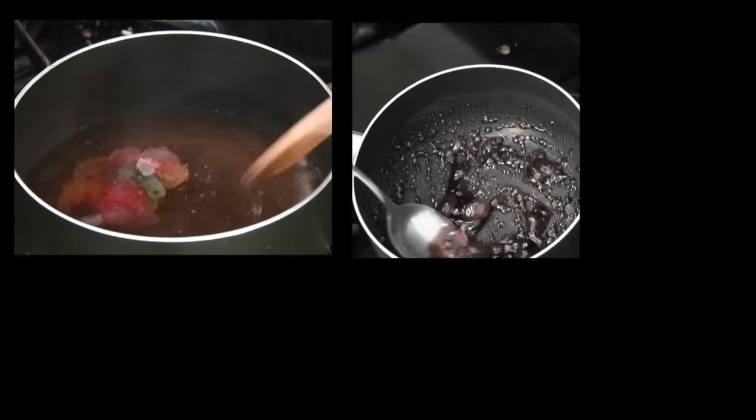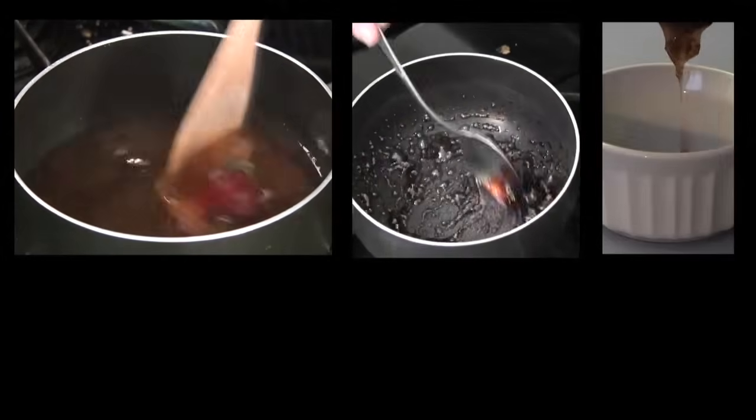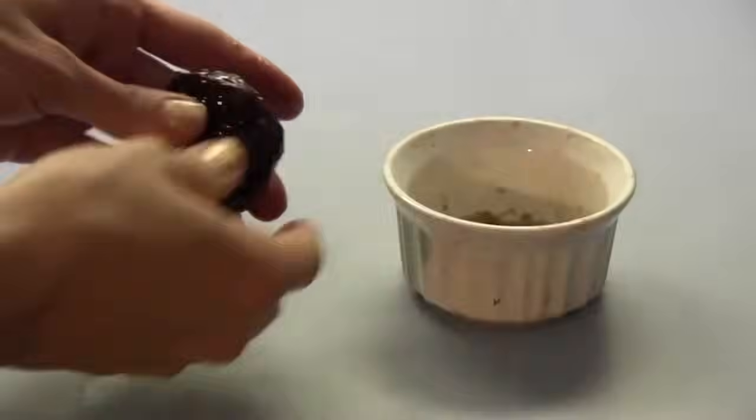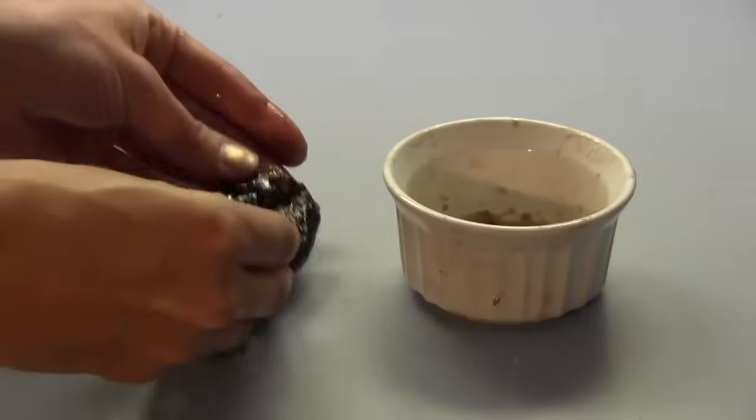To turn our jelly bean metamorphic rock into an igneous rock, we're going to melt it in this pot of boiling water. When our rock has cooled, you can see how all the different pieces combine to make an igneous rock with uniform structure throughout. Pretty cool, huh?